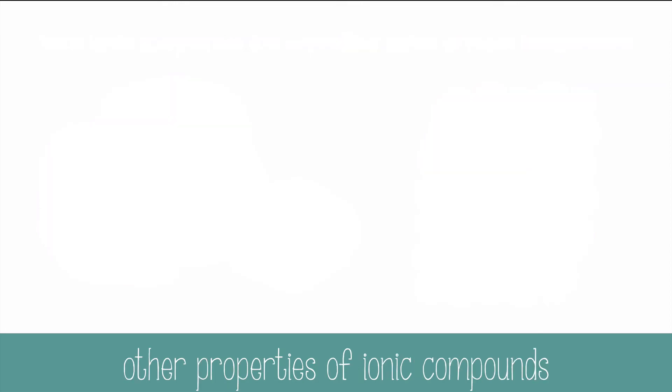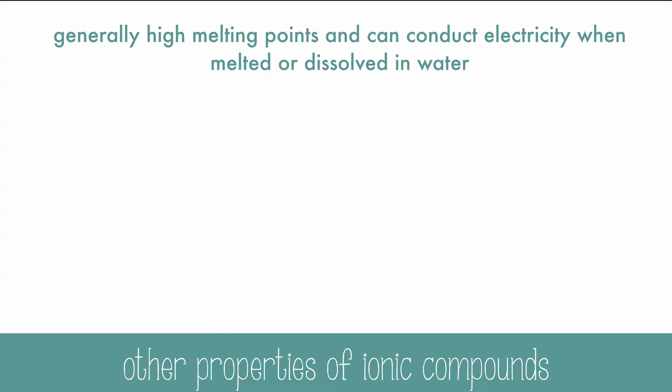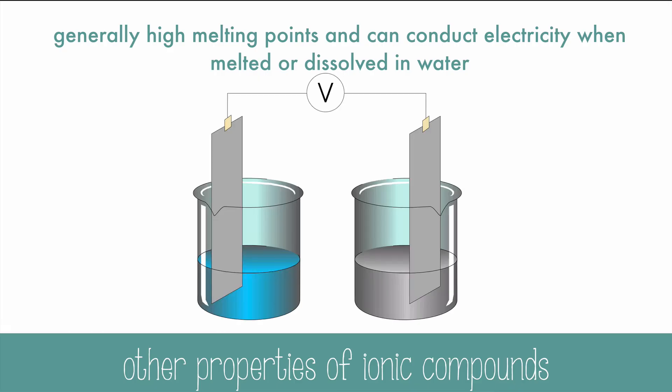Ionic compounds also have generally high melting points and can conduct electricity when they're melted or dissolved in water. The cations that are dissolved in water are attracted to the negative electrode, and the anions move to the positive electrode. This will help conduct electricity.